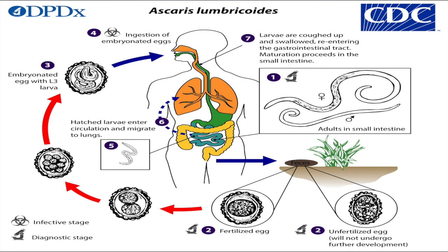After ingestion of embryonated eggs, the larvae hatch — that is, they are produced from the eggs. After that, the larvae invade the intestinal mucosa and are carried via the portal circulation to the lungs.